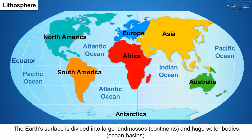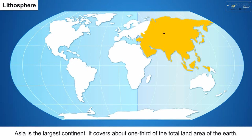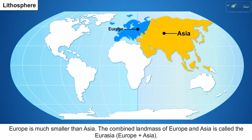There are seven major continents. 1. Asia is the largest continent — it covers about one third of the total land area of the Earth. 2. Europe is much smaller than Asia. The combined land mass of Europe and Asia is called Eurasia, or Europe plus Asia.